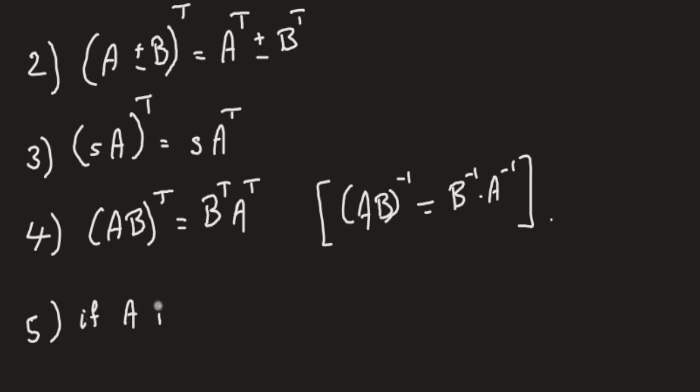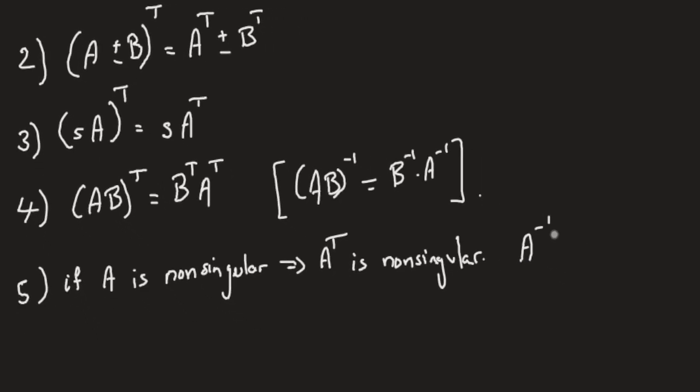Five, if A is non-singular, then so is A transpose. So non-singularity is preserved upon transposing. And not just that, since the inverse exists, we can talk about A inverse. And if you take the transpose of the inverse, it is the equivalent of taking the inverse of the transpose. So transpose and inverse interchange.